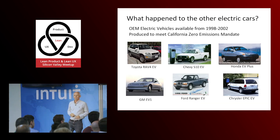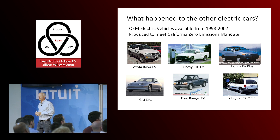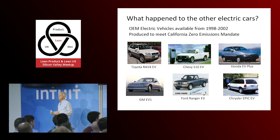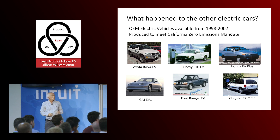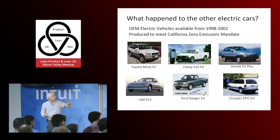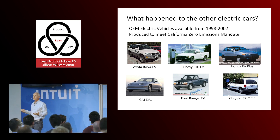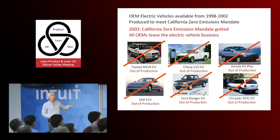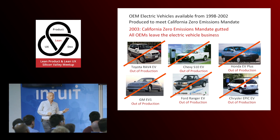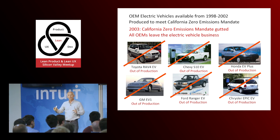California passed the zero emissions mandate, requiring all major car companies selling in California to have some percentage of zero-emission — which really meant electric — cars. The car companies hated being forced to make these things. So they spent a lot of time and effort not making electric cars, but lobbying in Sacramento. And it turns out that if you spend time and effort in Sacramento, you can get the zero emissions mandate rewritten — which is what they did in 2002. Every single car was off the market immediately, within a week, and since all those cars were leased, the leases were canceled.